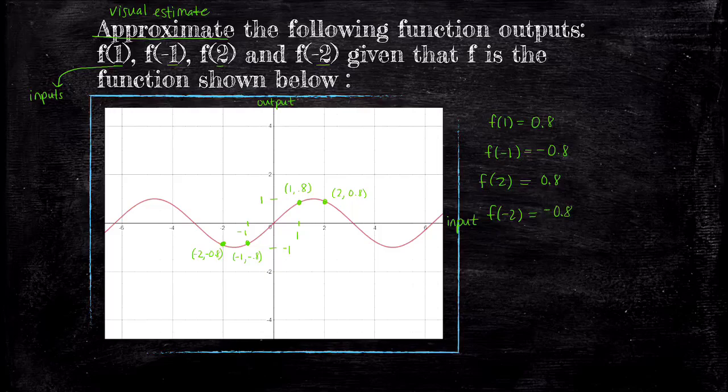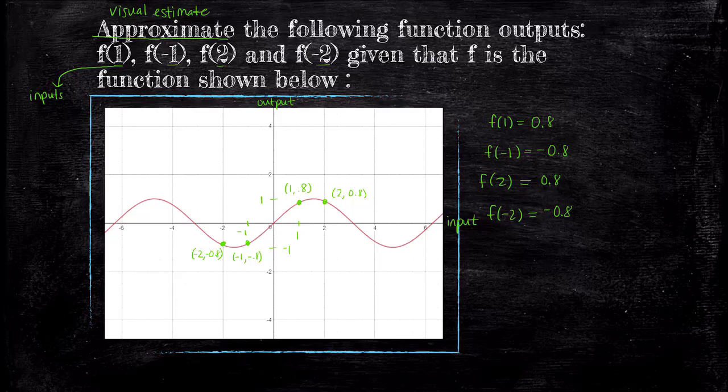If you're a perfectionist, you may be bothered by looking for a point that doesn't perfectly line up with a whole number. It's okay if we're a little off because we were specifically asked to approximate. That's the beauty of having a formula for outputs. It removes this guesswork.